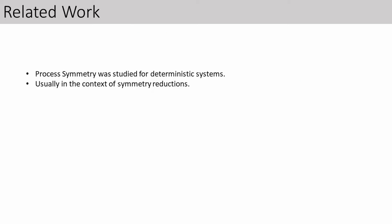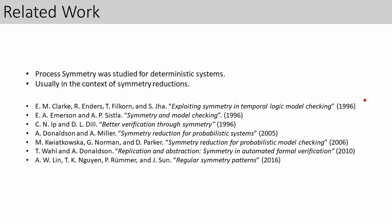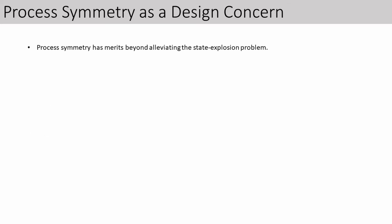Process symmetry has been studied before. In the 90s, there has been a lot of work on the broader context of symmetry reductions, where we reduce the state space of a model by taking its quotient under some relation called a symmetry. This was later extended also to probabilistic systems. More recently, there has been some work on process symmetry exclusively, considering symmetry patterns where the number of inputs is not fixed. Most of these works are in the context of reducing the state space of the system, or at least improving the efficiency of model checking.